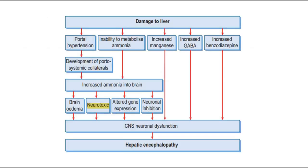This is a flow chart summarizing the proposed theories, including portal hypertension and inability to metabolize ammonia, causing increased ammonia levels in the brain, then later causing brain edema, neurotoxicity, altered gene expression, and neuronal inhibition. Other theories like increased manganese, increased GABA, and increased benzodiazepine also cause CNS neuronal dysfunction, and thus cause hepatic encephalopathy.